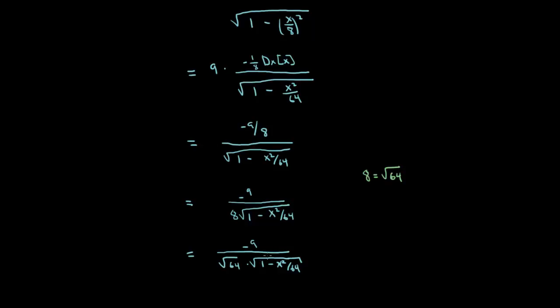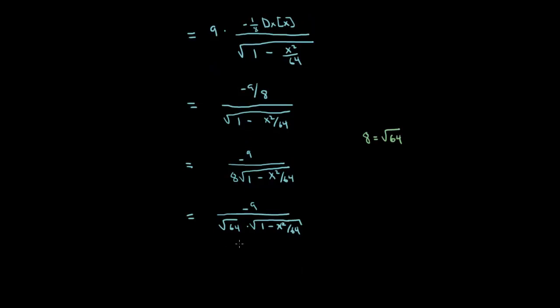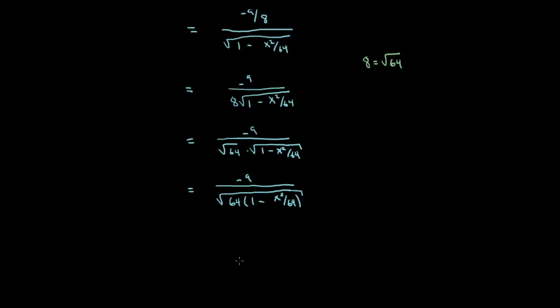Okay, but now what do we know about radicals? If we have two radicals with the same index, these are both square roots, we can multiply the radicands. If we multiply the radicands and write it as a single radical, we get negative 9 over the square root of 64 times 1 minus x squared over 64. Yeah, this is going to look a lot better. Okay, so now we can say this is negative 9 over the square root of 64. Now, what's 64 times x squared divided by 64? It's just minus x squared.